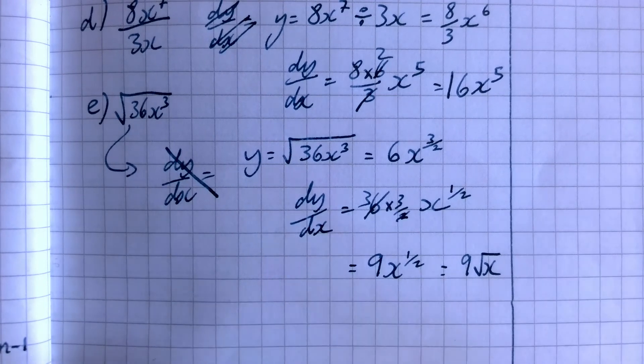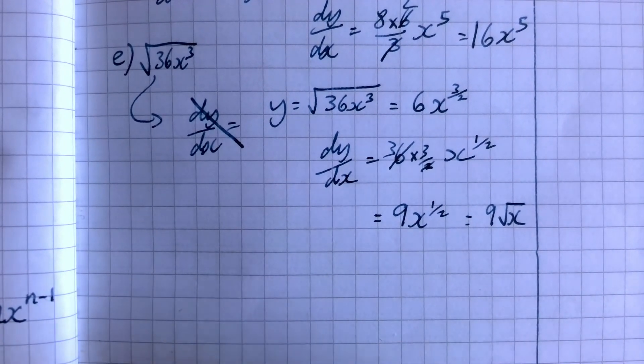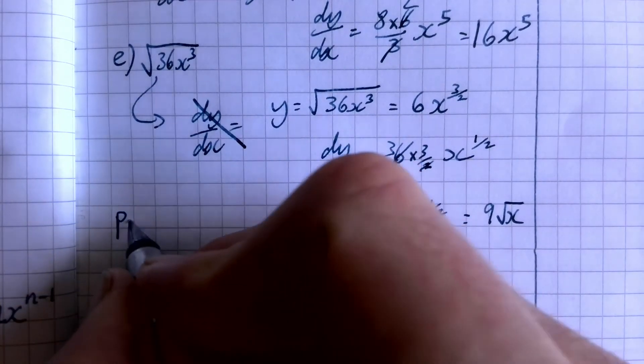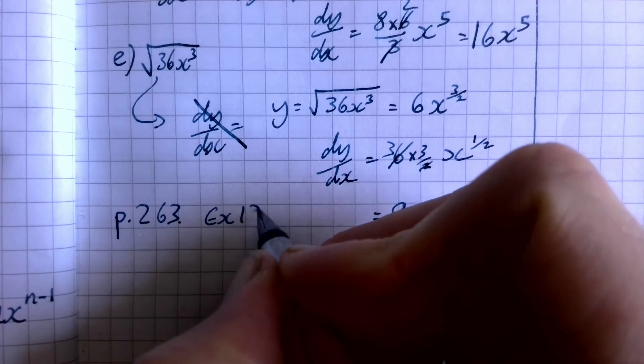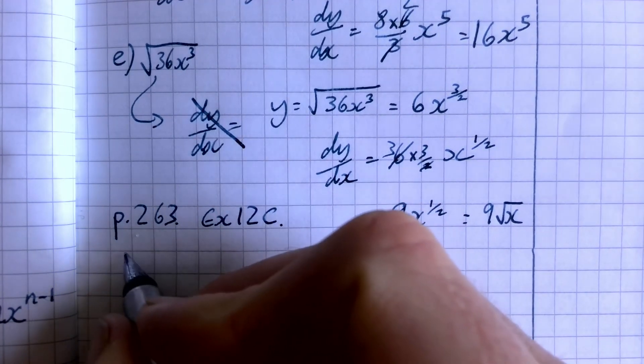Right, so once you've got that sorted out in your head, the thing to do is just do a whole load of this and start off with it nice and easy. Keep it easy. Keep yourself feeling good about it. So what we are going to do, page 263, exercise 12 C. And today I want you to do every question.